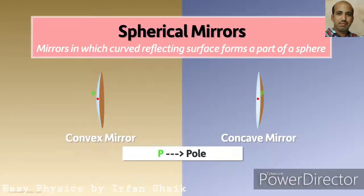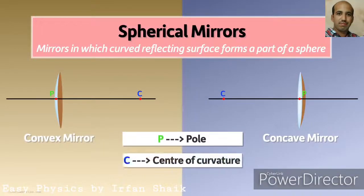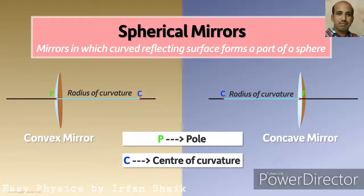The center of the reflecting surface is called the pole. The center of the sphere of which the mirror forms a part is called the center of curvature. The radius of this sphere is called the radius of curvature. CP denotes the center of curvature; for a concave mirror, the center of curvature lies at the front of the surface.